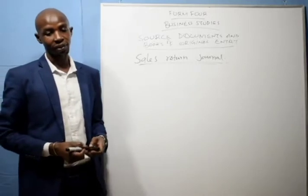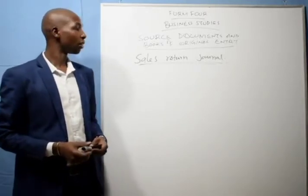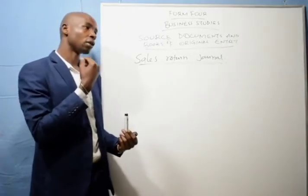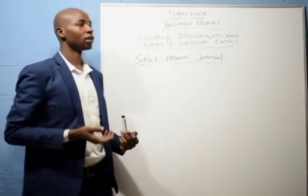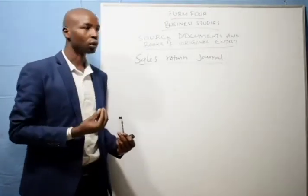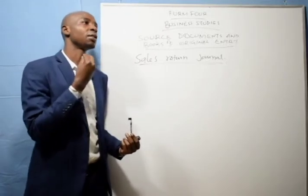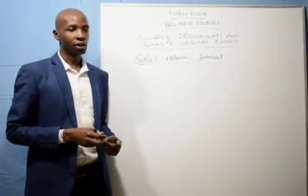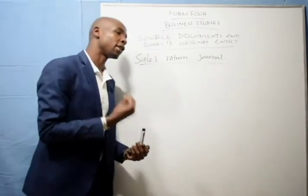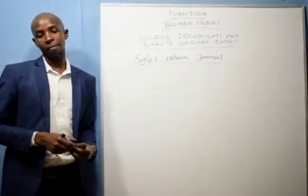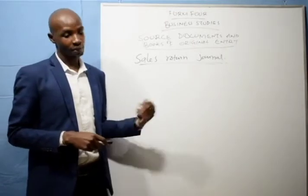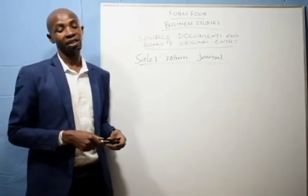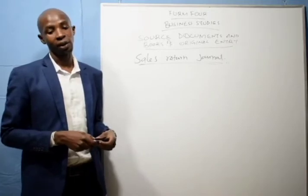Today I want us to look at the sales return journal. At times a business buys and sells, and when you sell goods and whoever you sell to finds that the goods you have supplied them with are not the ones that they want, they will return them. When they return them, there is a book to record that which is returned, and that book is called the sales return journal, also known as the return inwards journal.